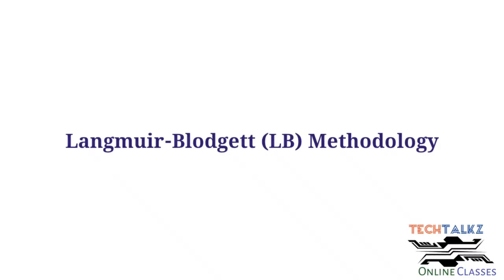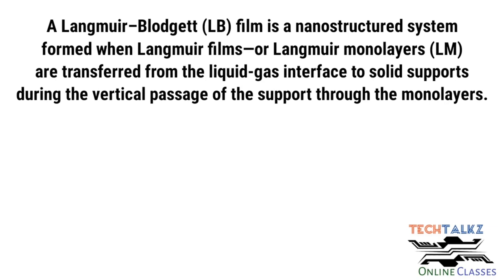Next topic: LB filmmaking, which stands for Langmuir-Blodgett filmmaking. This is a very important topic — worth 10 marks at university level. A Langmuir-Blodgett film is a nanostructure system formed when Langmuir monolayers are transferred from the liquid-gas interface to a solid support during the vertical passage of the support through the monolayers.